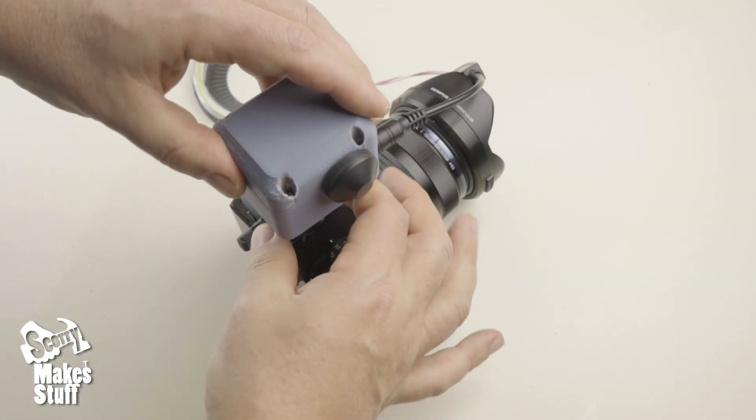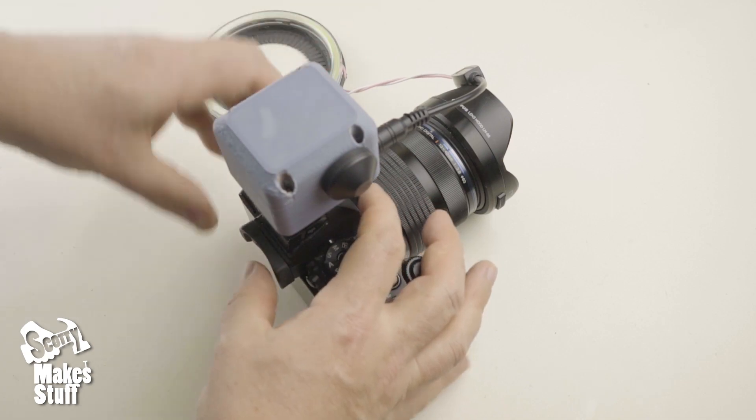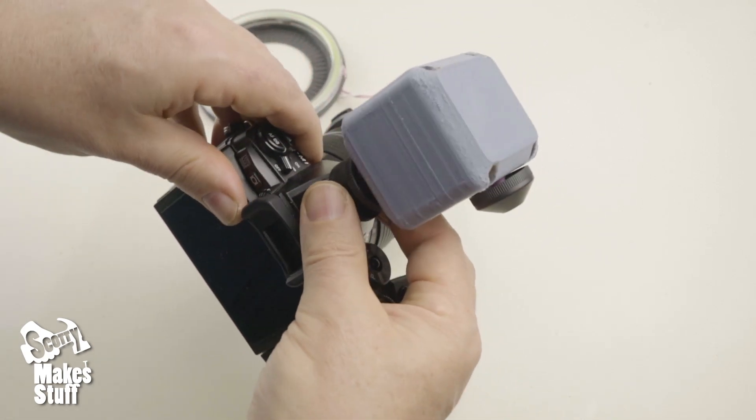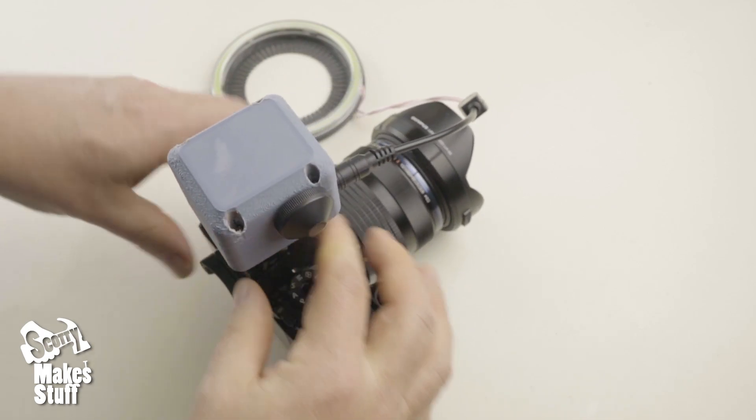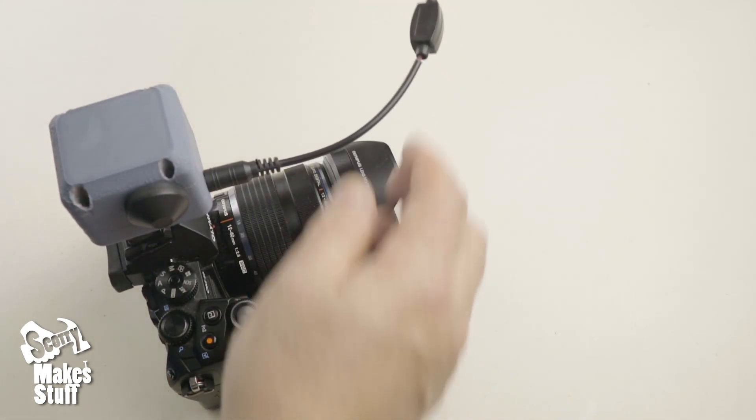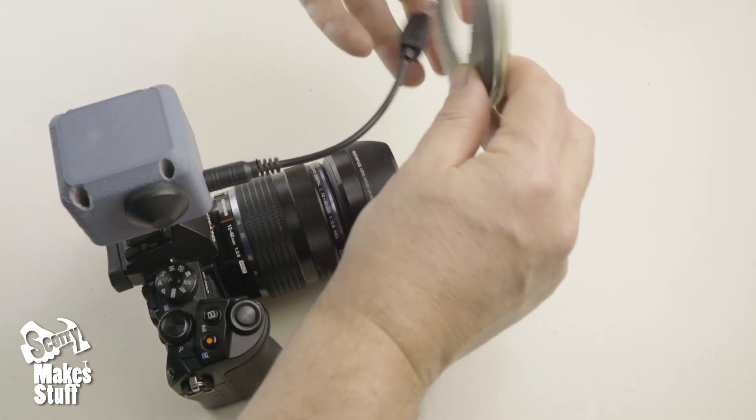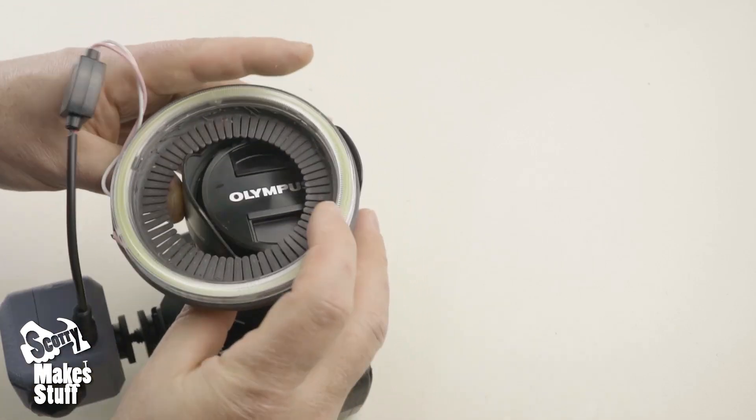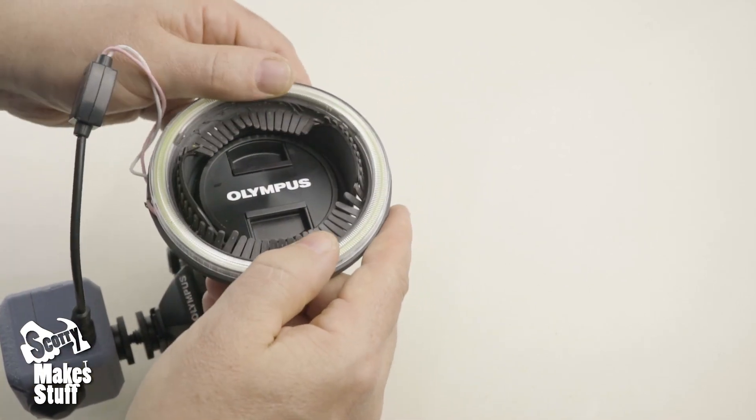It attaches directly to the camera's hot shoe attachment, and I printed up a flexible holder for the LED ring light. This sits nicely around most macro lenses.